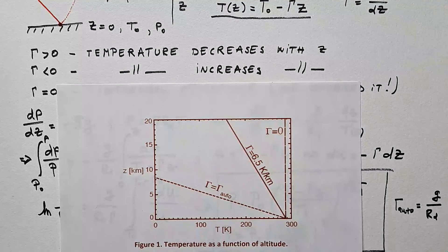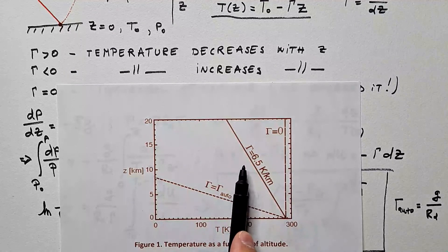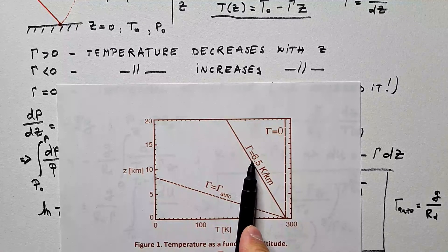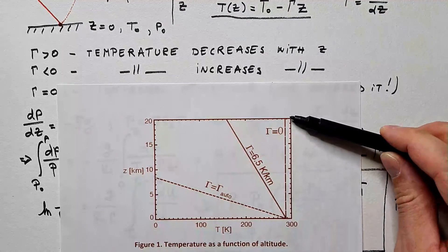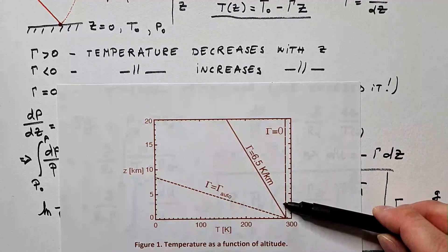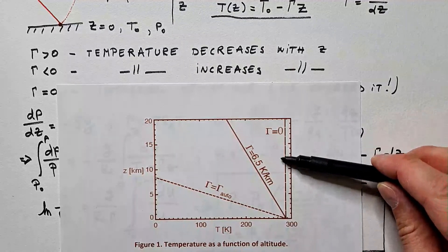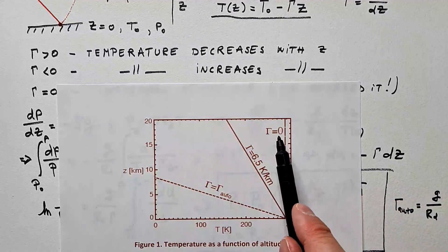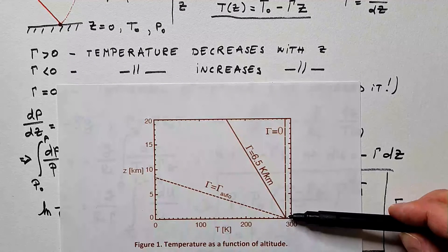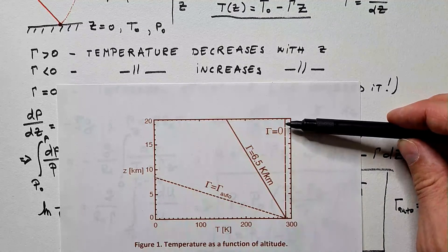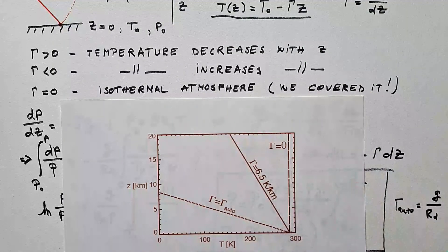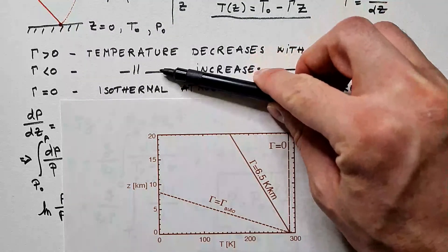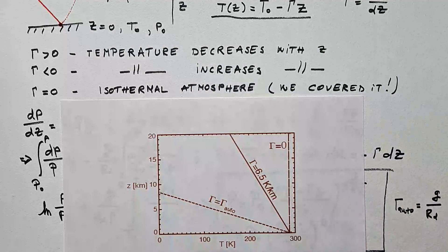And this value is important because this is called temperature lapse rate of dry atmosphere or dry temperature lapse rate. And this is in accordance with our assumption here that air is completely dry. So, if there is no moisture in air, then temperature would naturally decrease for 6.5 Kelvin per kilometer. And in previous videos, we covered also the case where γ is zero. And that means temperature is constant with height. And we call that isothermal atmosphere. So, you can see here these cases in this figure.